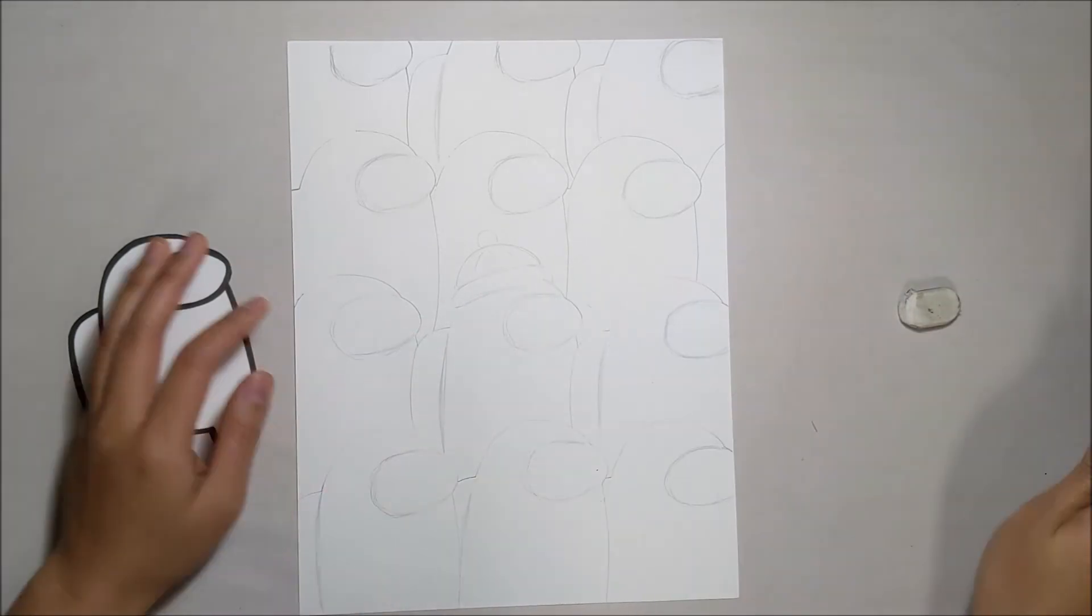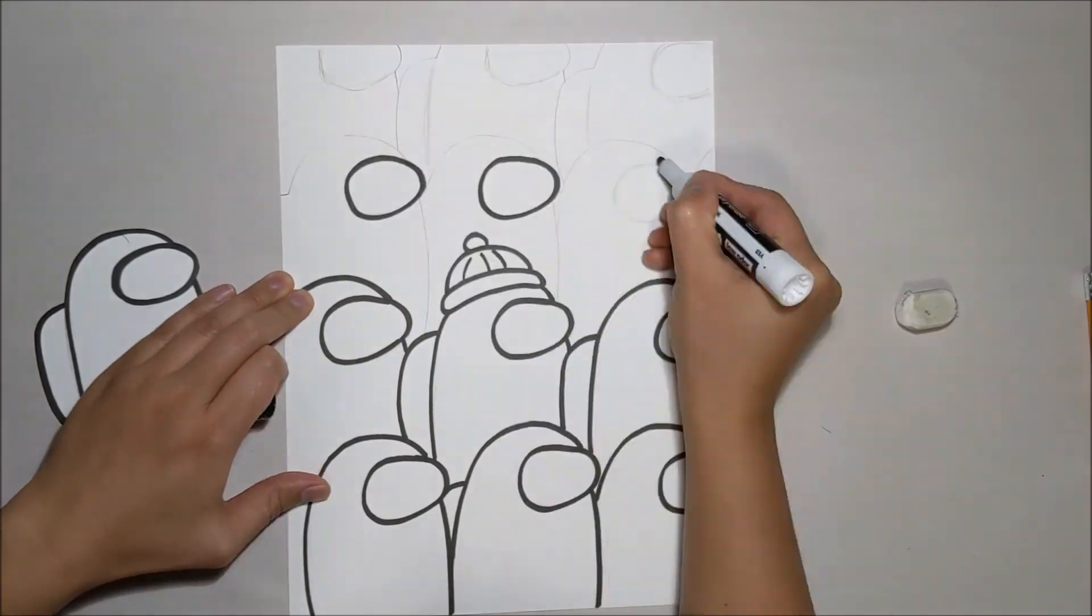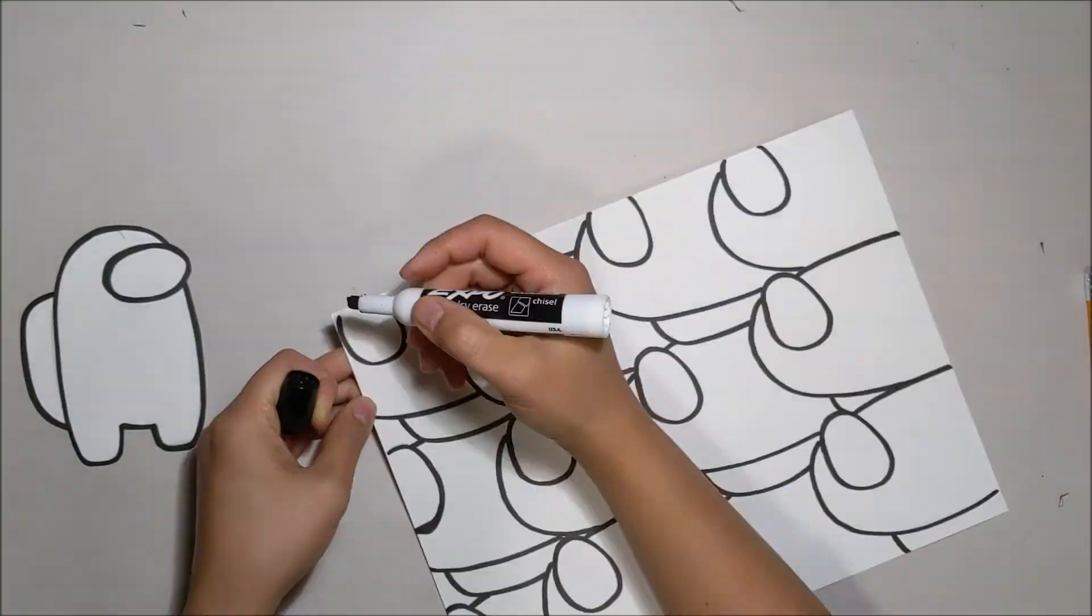Once you are all done with the pencil lines give it a nice outline with the black marker. Once you are done with the outline clean up all the pencil lines with the eraser.